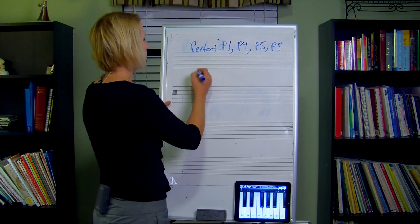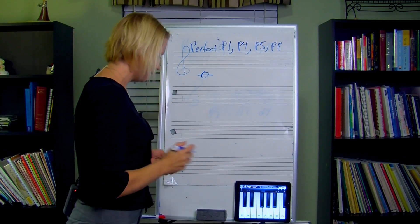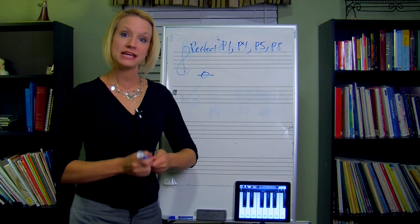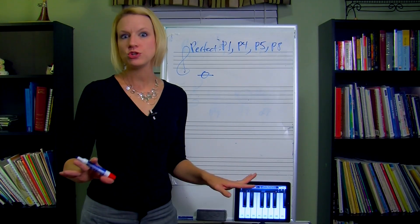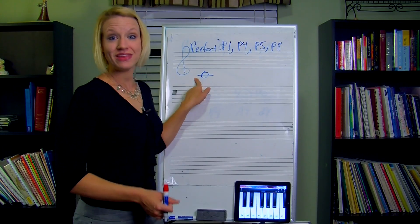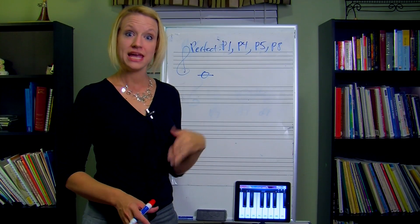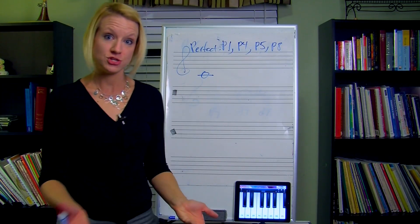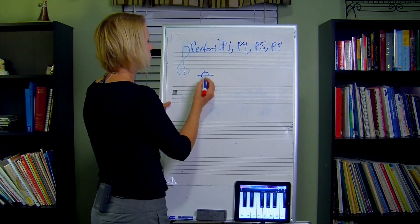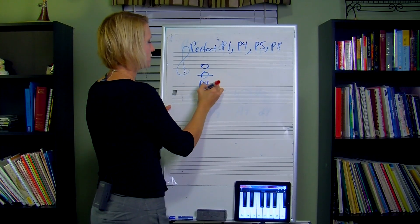My first example — we'll do one in the key of C. If we have a C and a perfect fourth up from C, think about the key of C: there are no sharps or flats in it, so any note we put on top is going to be either perfect or major. For a perfect fourth, we count one, two, three — that is my perfect fourth.